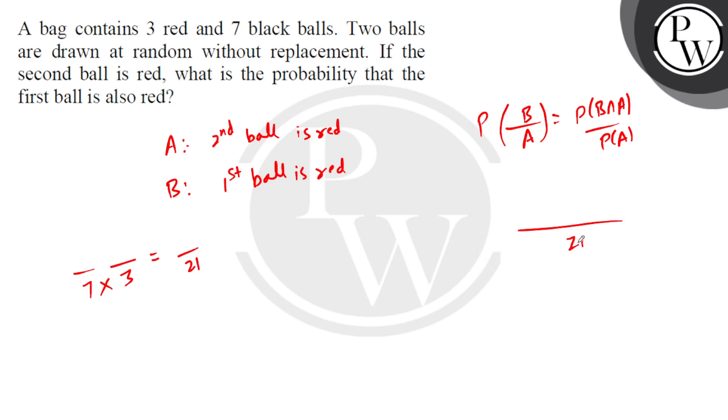Now, basically, second ball is red. If the second ball is red, right, the first ball is something. So, either it could be black or it could be red. If the case is red,